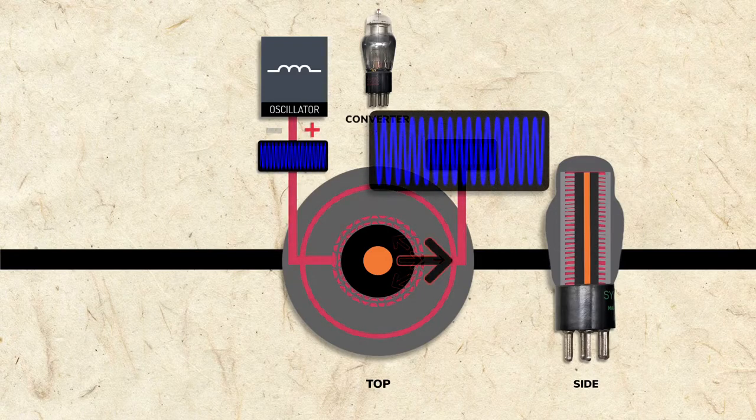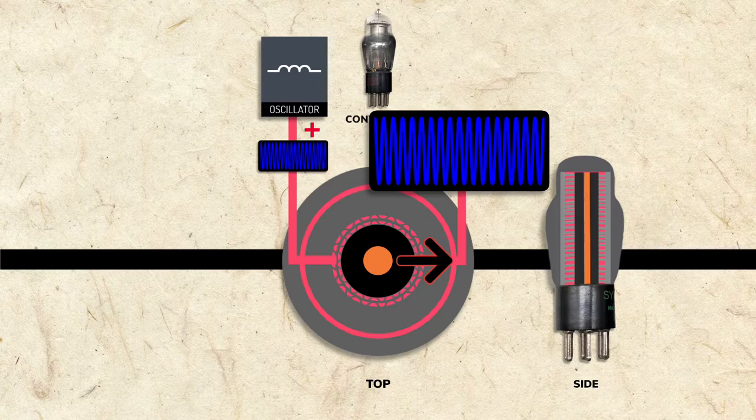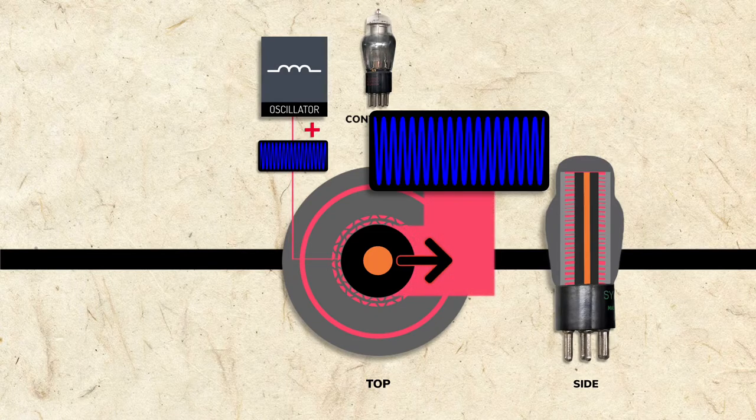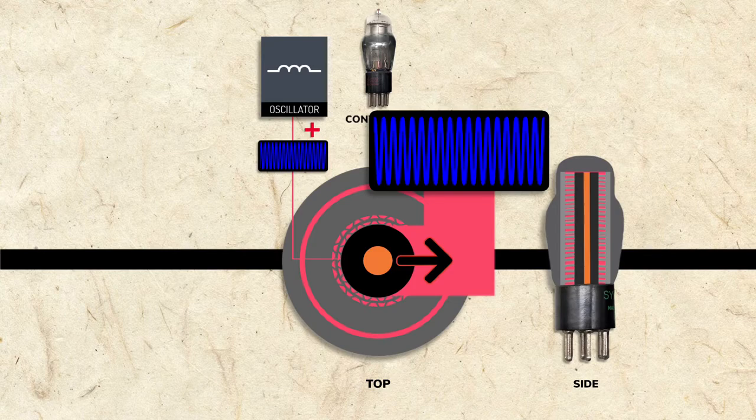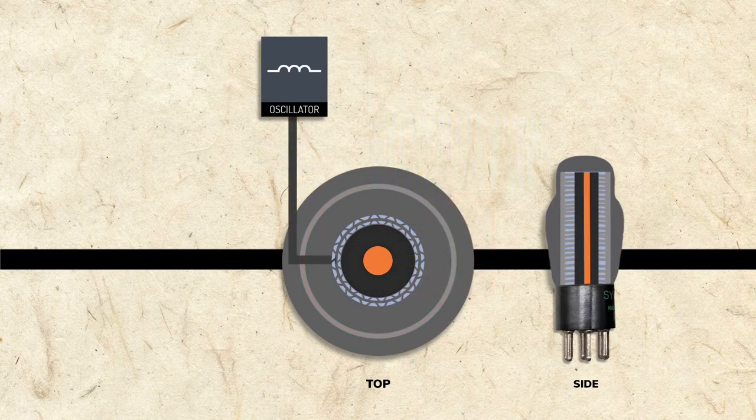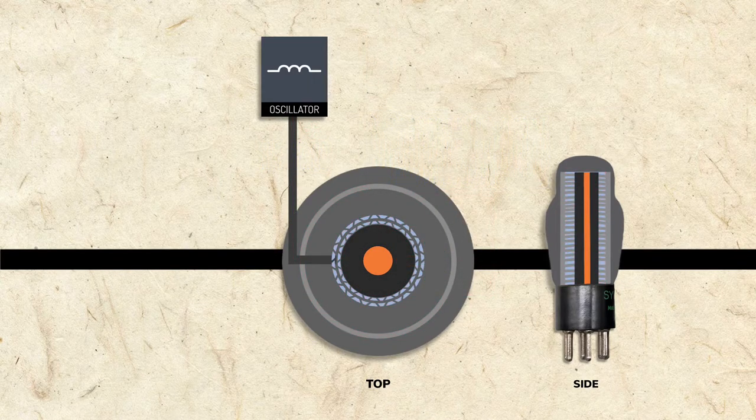But the signal is much stronger now because the current flow from the cathode to plate is far greater than the tiny current coming from the oscillator. This is how tubes amplify. In addition to the oscillator signal on grids 1 and 2, the antenna signal is applied to grid 3.